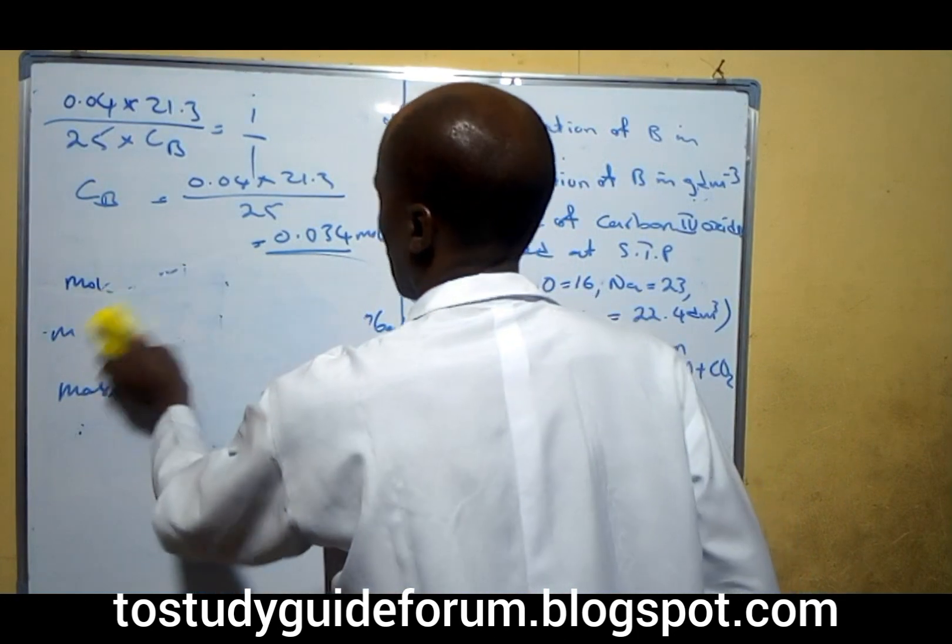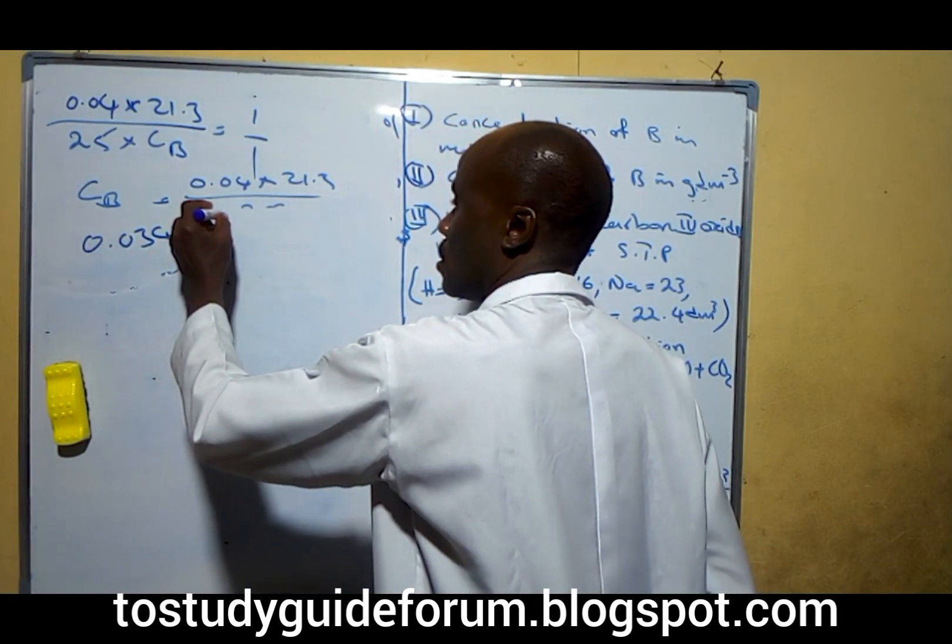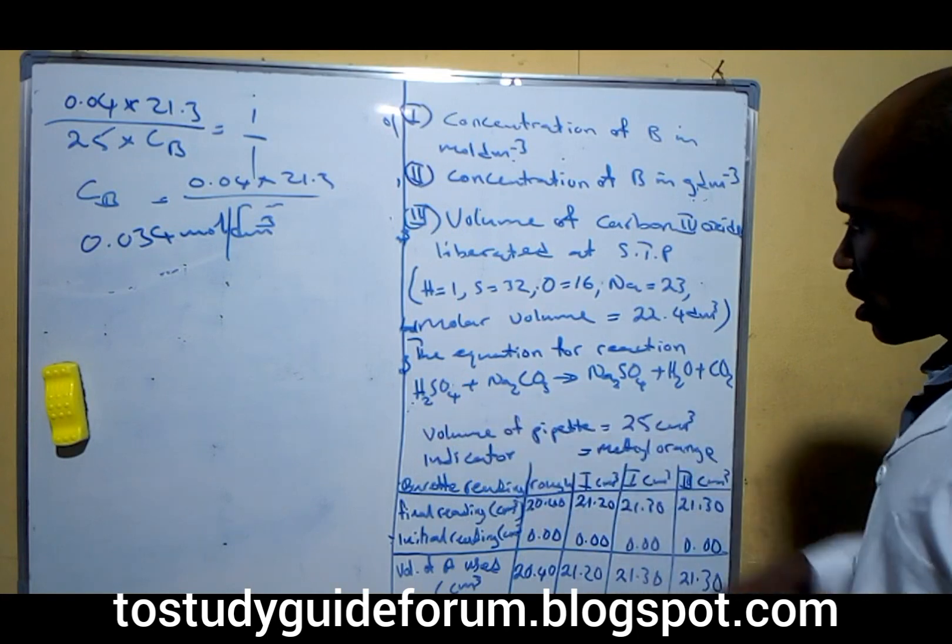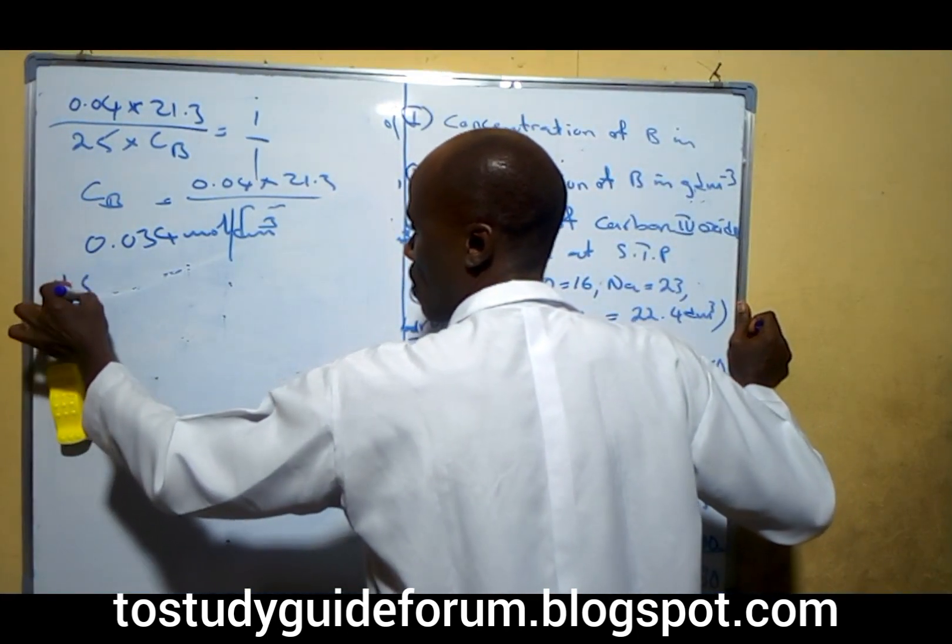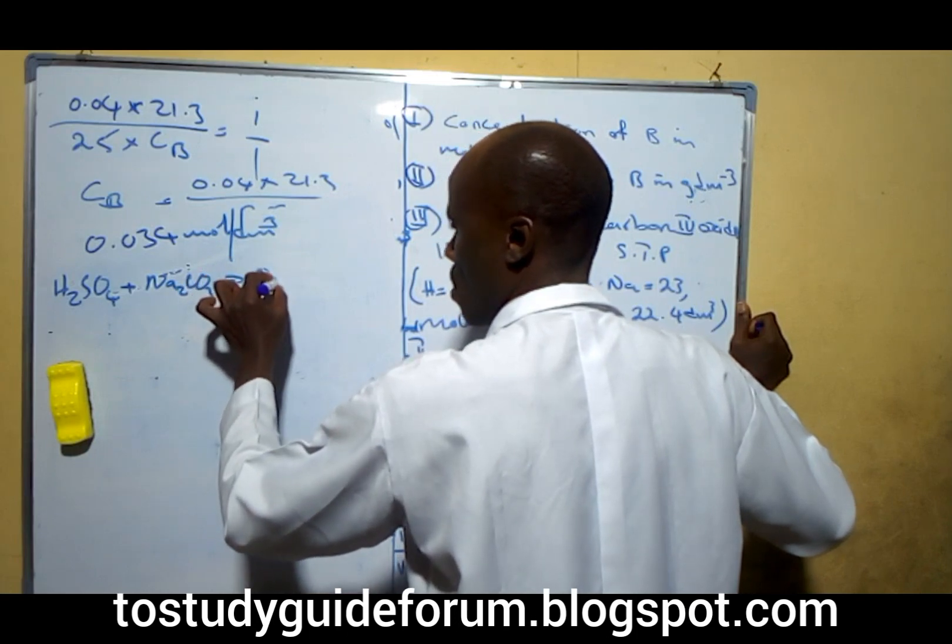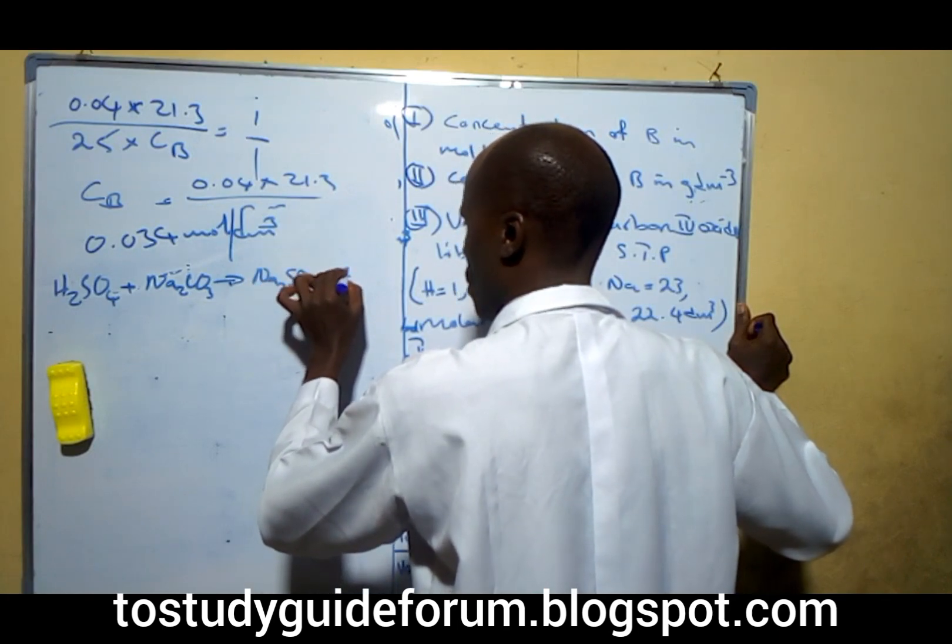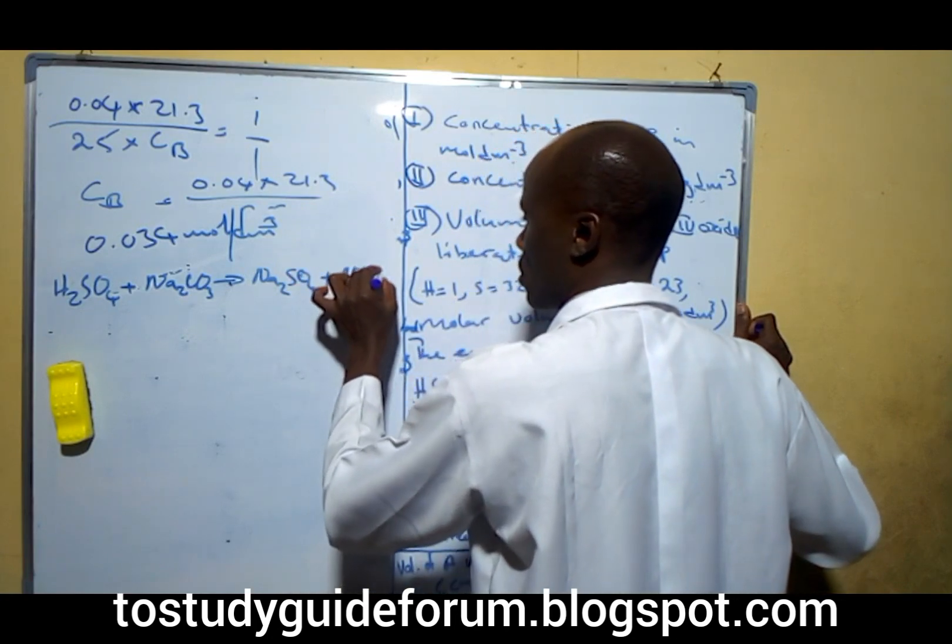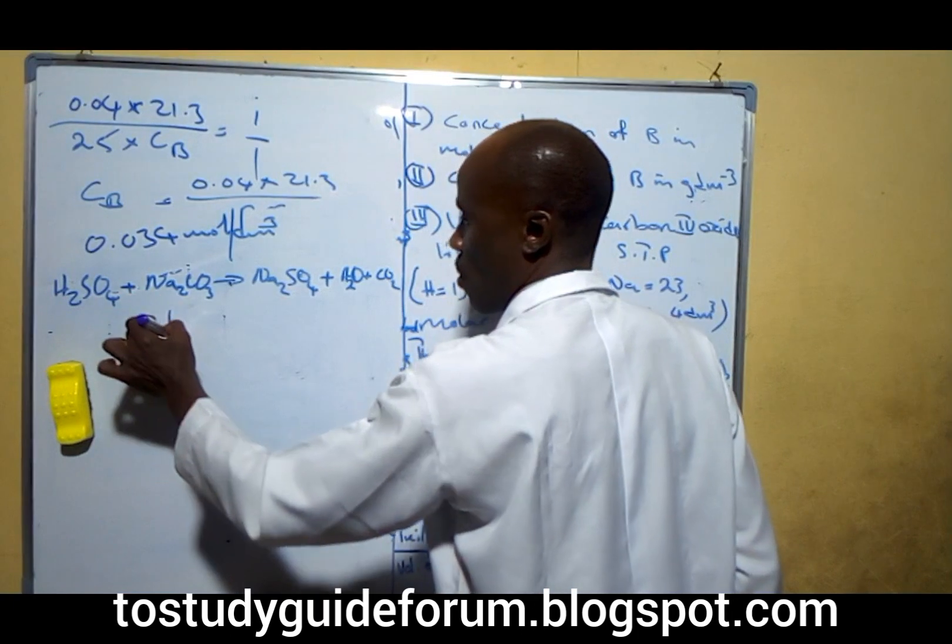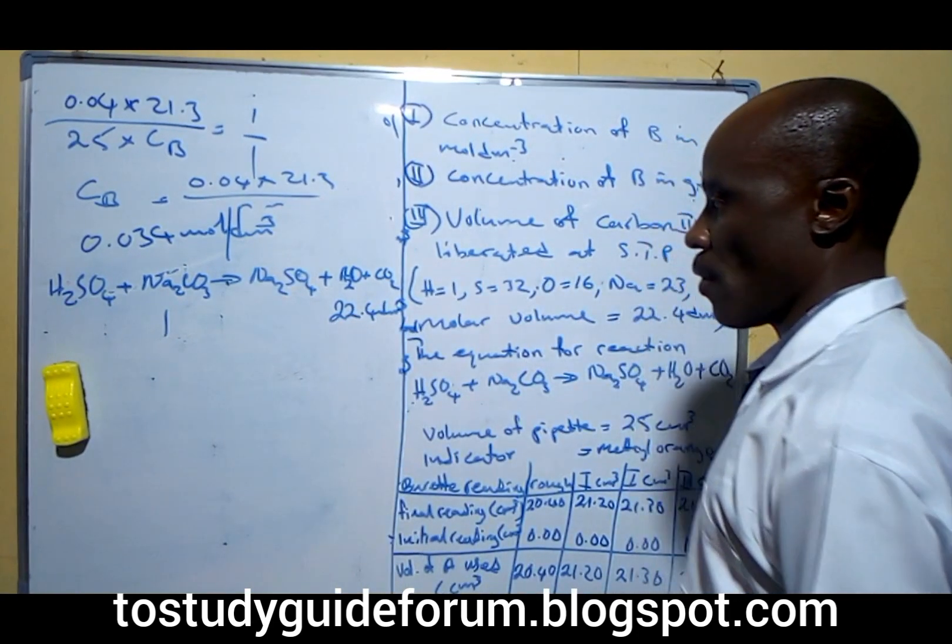At STP, the volume of carbon (IV) oxide liberated. We know that our mole concentration is per dm³. Looking at the equation here, this equation we have with water plus carbon (IV) oxide. From this equation, you notice that one mole of this liberates 22.4 dm³ of carbon (IV) oxide.